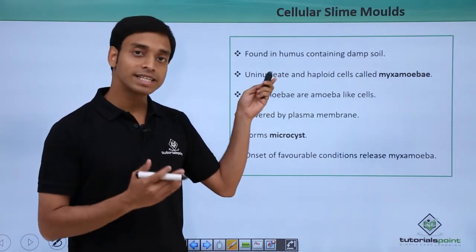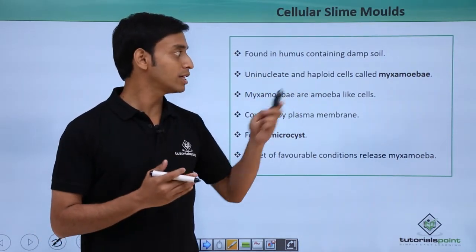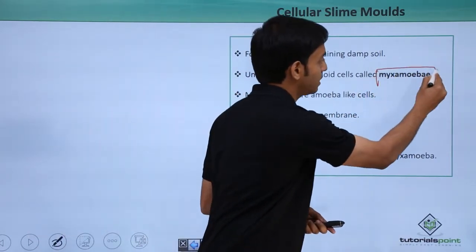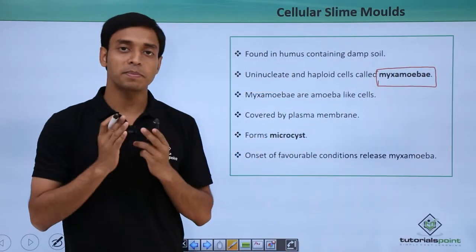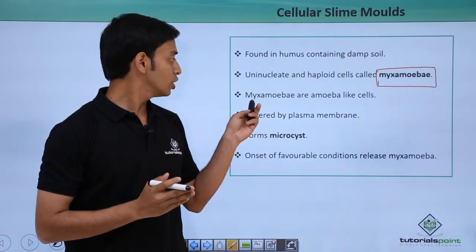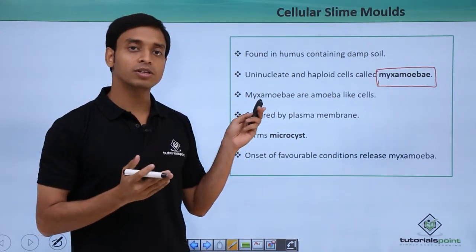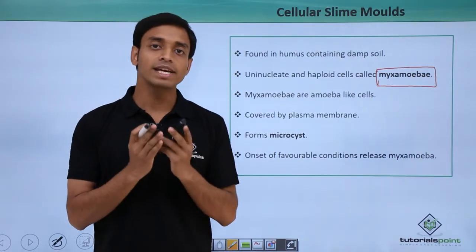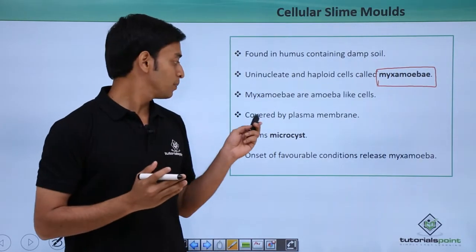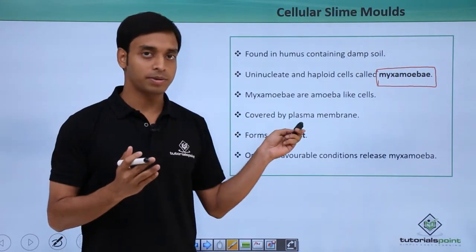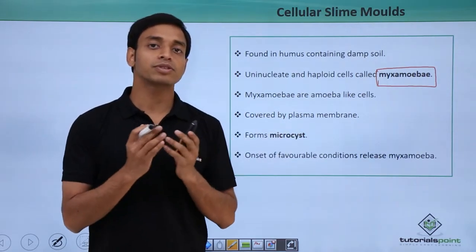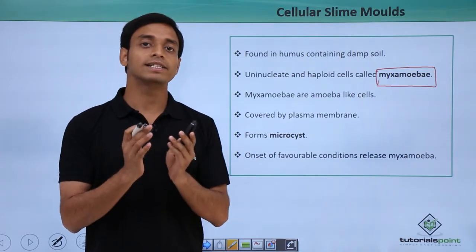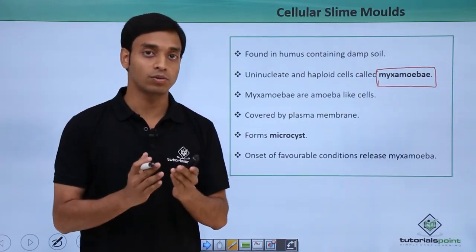These uninucleate haploid cells have been given a term known as myexamoeba. From the name we can understand they are mostly amoeba-like cells. They are covered by a plasma membrane — that is, the outermost layer of these cellular slime molds is the plasma membrane and not a cell wall.